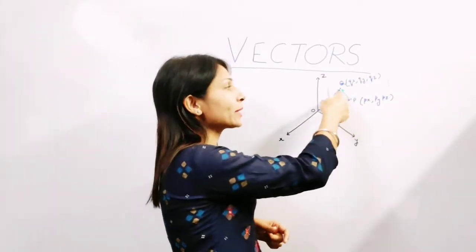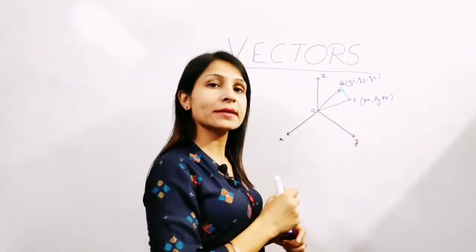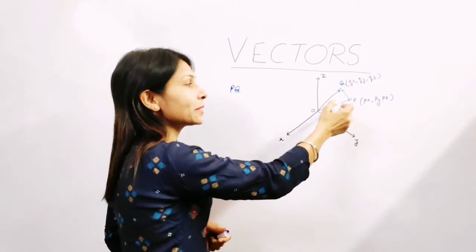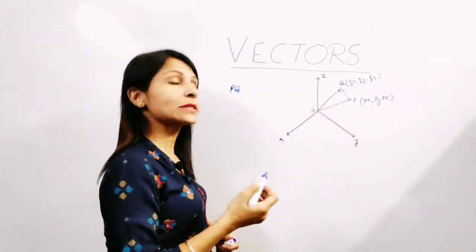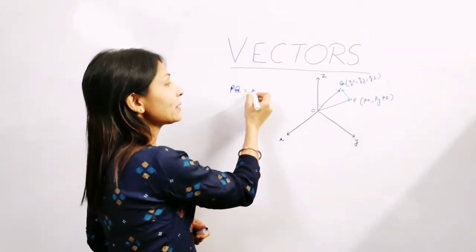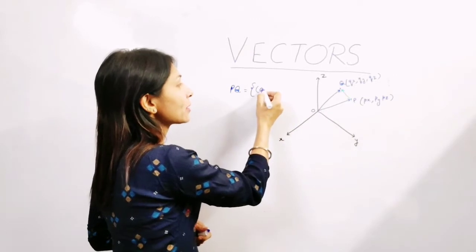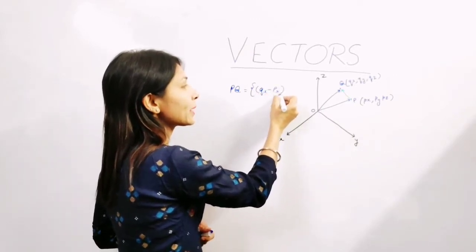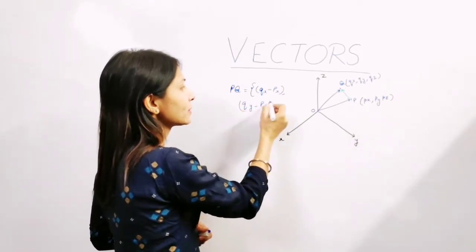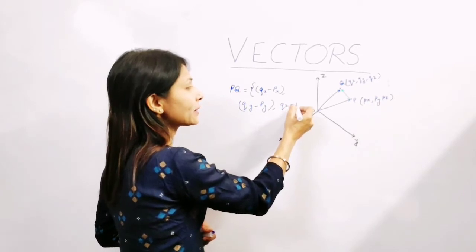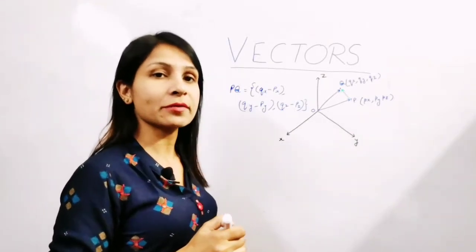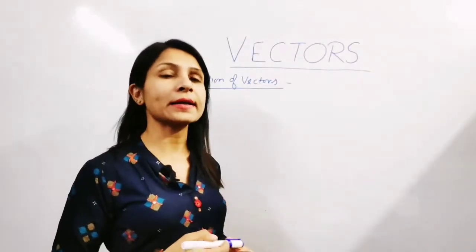If we have the component of vector PQ, then PQ will be called the displacement vector. Because P and Q represent the position vectors and PQ will represent the displacement vector. So it will be given by: Qx minus Px, Qy minus Py, and Qz minus Pz. This is the component of our displacement vector. Let's begin with addition of two vectors.